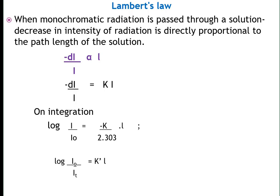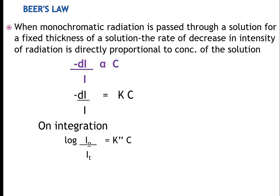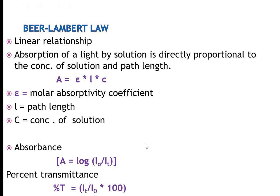As per Lambert's law, when monochromatic light is passed through a solution, the rate of decrease in intensity is directly proportional to the path length of the solution. On integration, we get log I0/I equals to k. For Beer's law, when monochromatic light is passed through a solution of fixed path length, the rate of decrease in intensity is directly proportional to the concentration of the solution. The Beer-Lambert law is a combination of both, expressing a linear relationship.